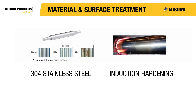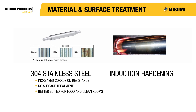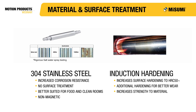Electroless nickel plating provides additional corrosion resistance and hardening for better wear resistance. Misumi also offers all rotary shaft options in 304 stainless steel, which is the best option for corrosion resistance. Since it is not a surface treatment, there is no potential for chipping or flaking, making it ideal for food and clean room applications. It is also non-magnetic. For drive shafts, we offer an induction hardened option that increases surface hardness to about 50 Rockwell C for better wear resistance and increased strength for more demanding applications.